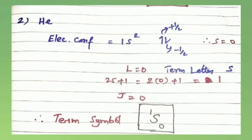Next problem: calculate the ground state term symbol of the helium atom. The electronic configuration is 1s². There are 2 electrons — one clockwise (spin +1/2) and one anti-clockwise (spin −1/2) — so S=0. Therefore, L=0 giving term letter S, and 2S+1 = 2×0+1 = 1. The term symbol is ¹S₀.